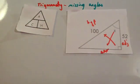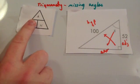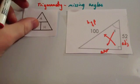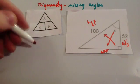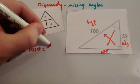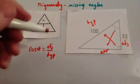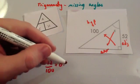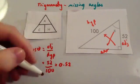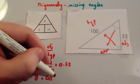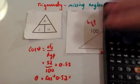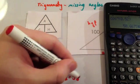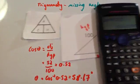We're trying to find the angle, so we cover up the cosine. Cos θ equals adjacent divided by hypotenuse. Substituting in the numbers: the adjacent equals 52 and the hypotenuse equals 100, so we do 52 divided by 100 and get 0.52. We want to find out what β is, so β equals the inverse cos of 0.52. In the calculator: shift cos 0.52, press equals, and you get 58.67 degrees.